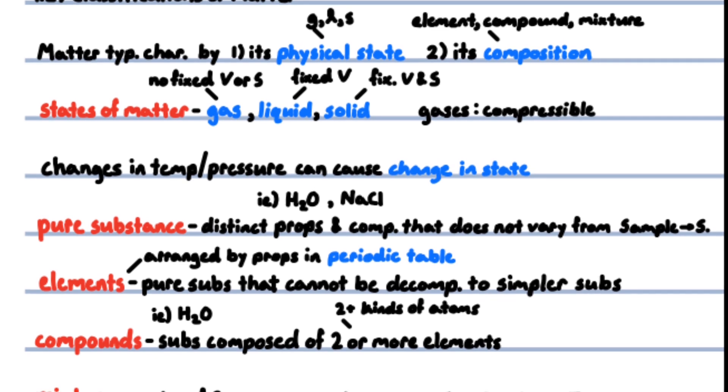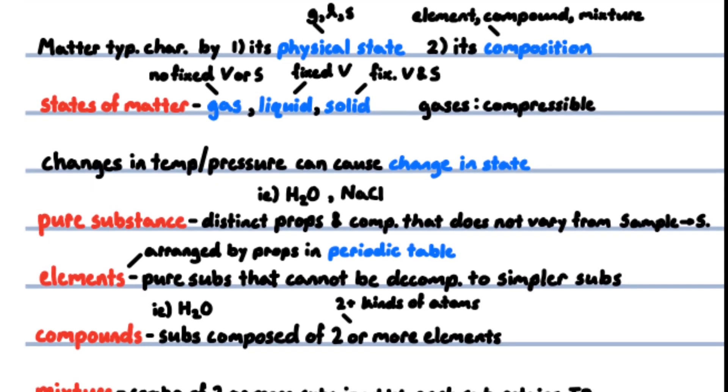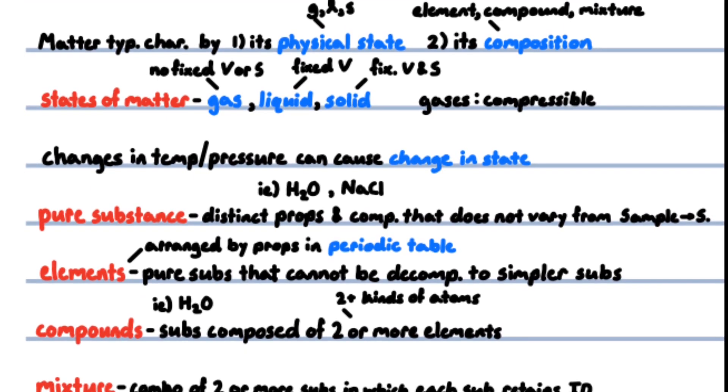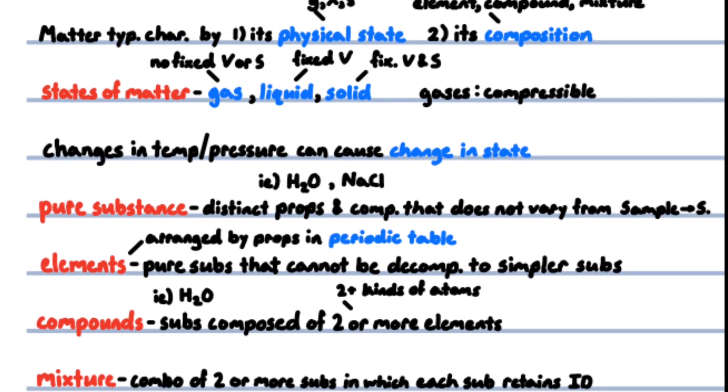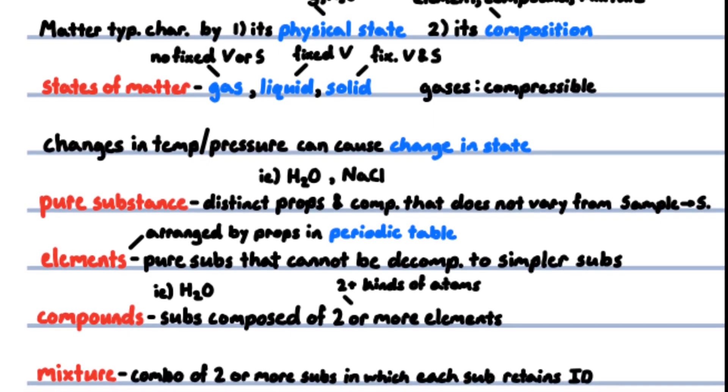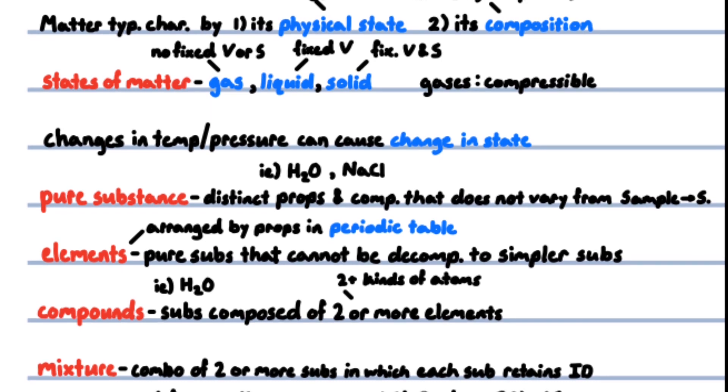A gas, also known as a vapor, has no fixed volume or shape. It takes the shape and volume of its container. A gas can be compressed or expanded. A liquid has a distinct volume but takes the shape of its container. A solid has a definite shape and a definite volume. Liquids and solids cannot be compressed or expanded to any appreciable extent.